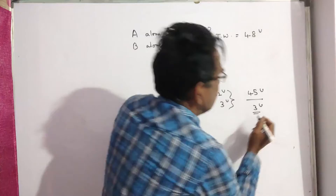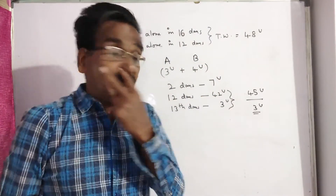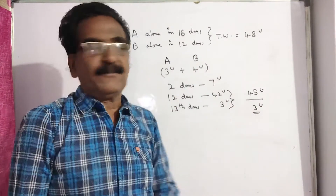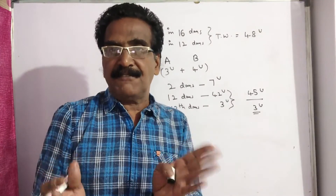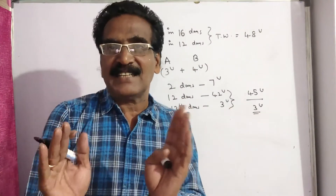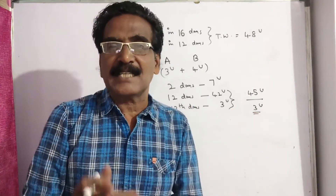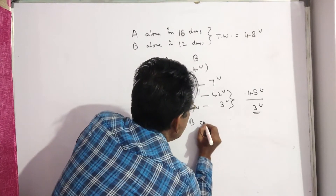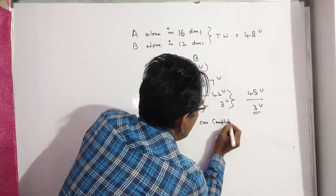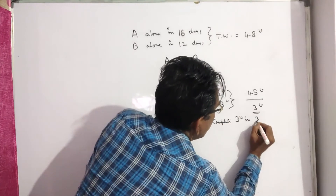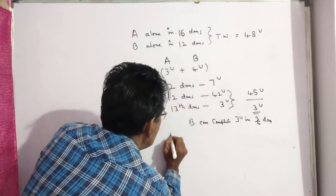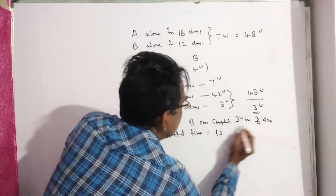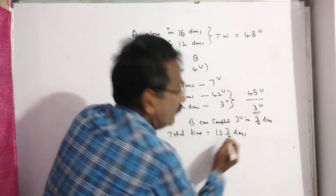Now 3 units of work is remaining. On the 14th day, B has to come. B completes 4 units per day, but only 3 units of work is remaining, so B can complete 3 units of work in three-fourths of a day. Total time is equal to 13 days plus 3/4 day. Thank you, have a nice day.